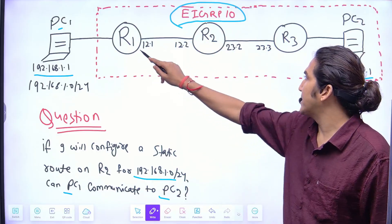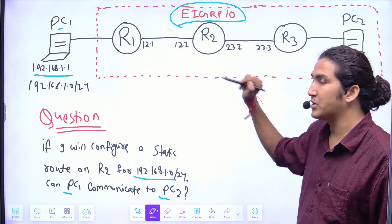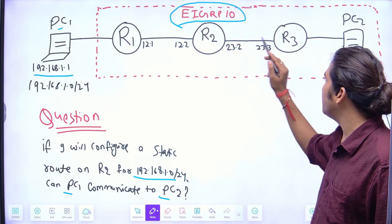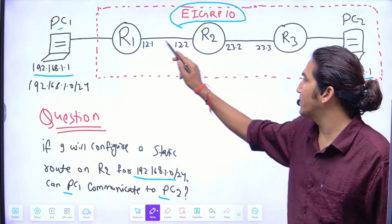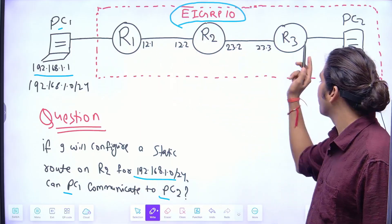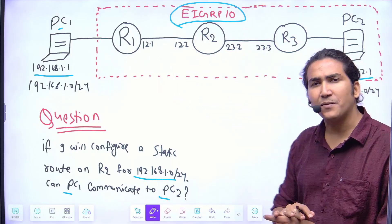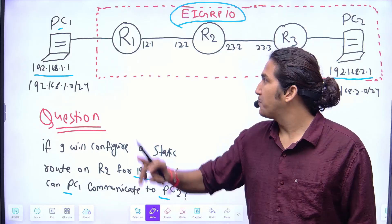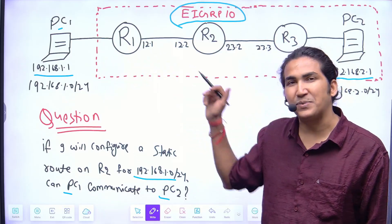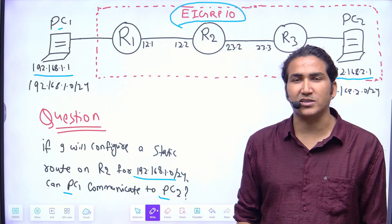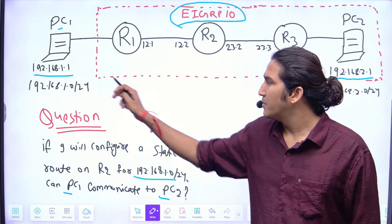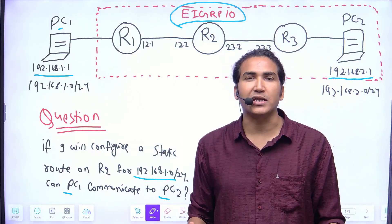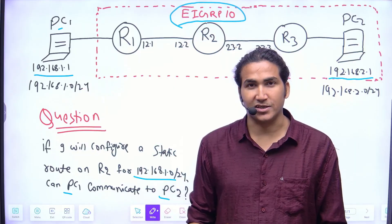Router 1 has EIGRP neighbors with R2, and R2 has neighbors with R3 — meaning R2 has two neighbors: R1 and R3. Everything is working fine. PC1 and PC2 are able to communicate with each other; both LAN users are able to communicate.